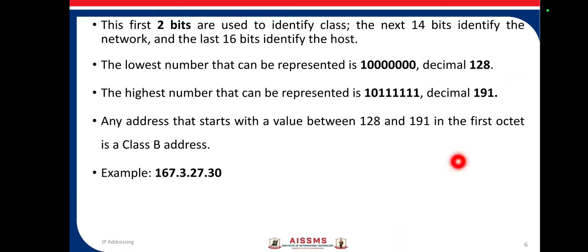The first two bits are used to identify the class, and the next 14 bits are used to identify the network. The lowest number of class B is decimal 128 and the highest number is decimal 191.